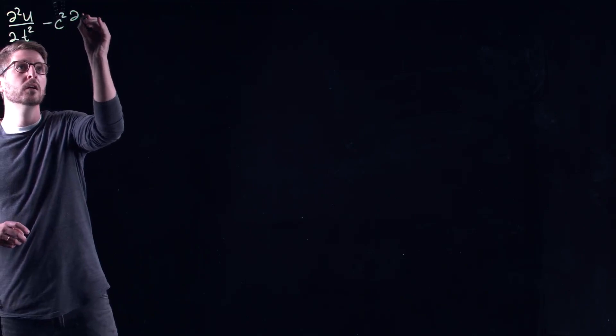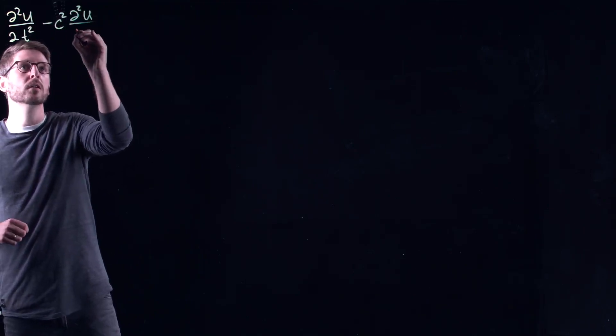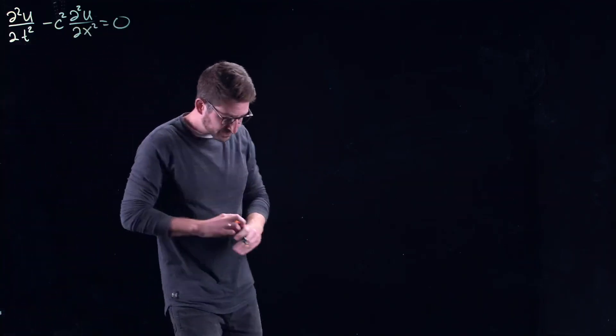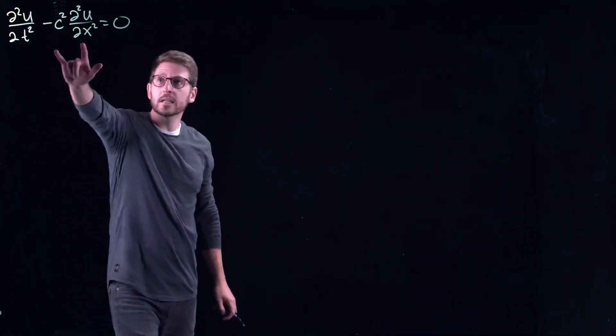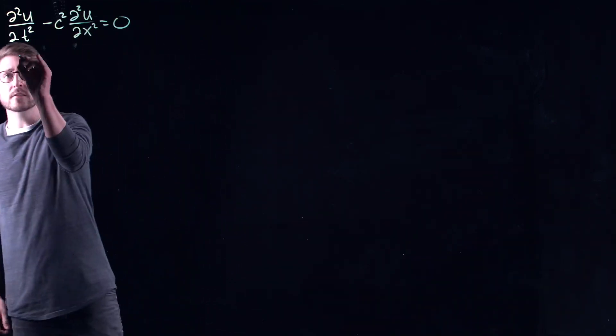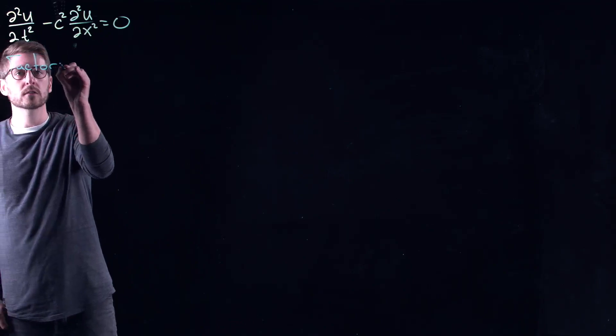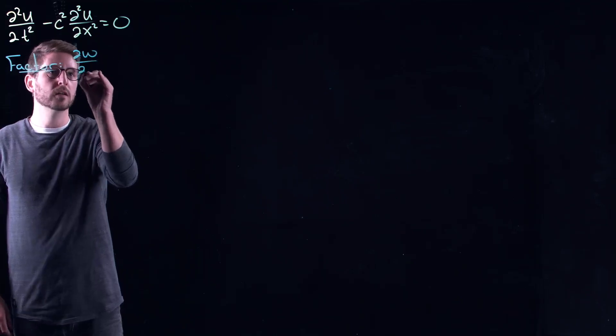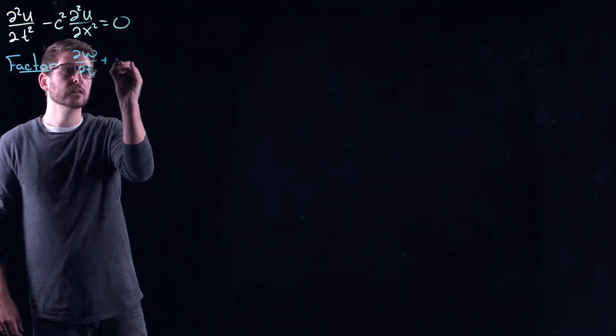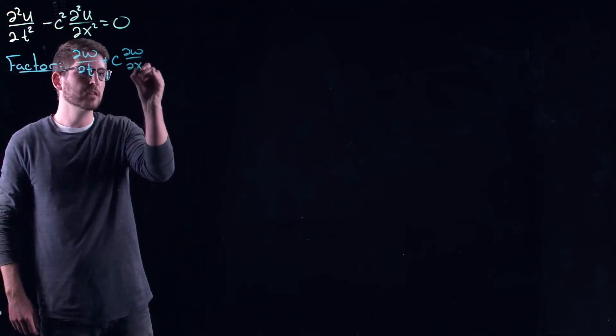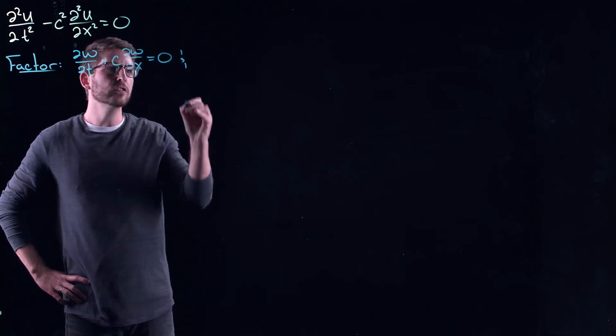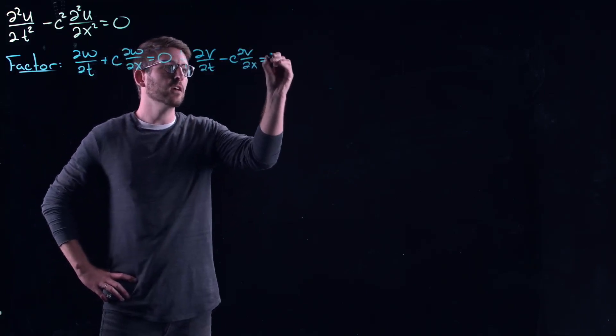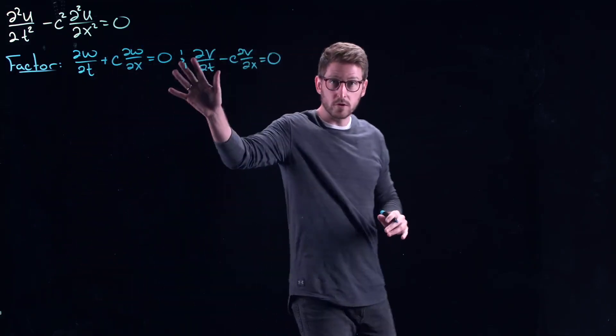I am going to use just the simple linear constant speed wave equation here. And you'll remember that I did a little factoring at the beginning of the previous video. I factored this to get two different equations. So here were the equations that I had: partial w with respect to t plus c partial w with respect to x equals zero, and partial v with respect to t minus c partial v with respect to x also equals zero.